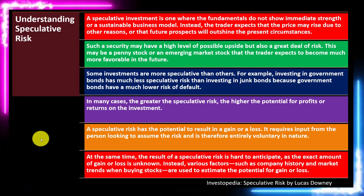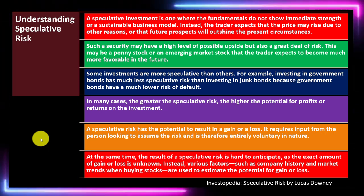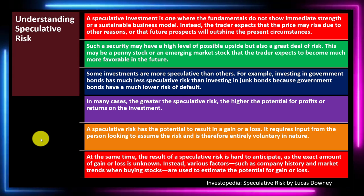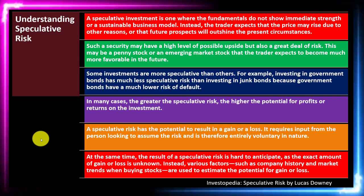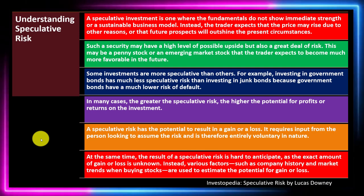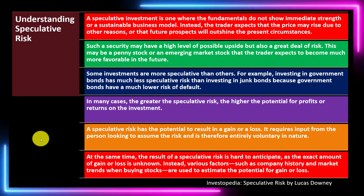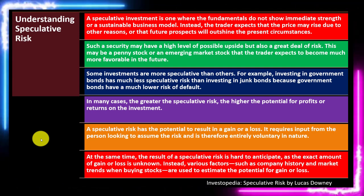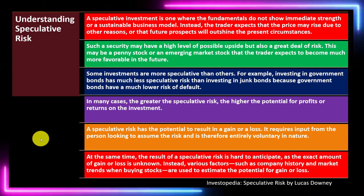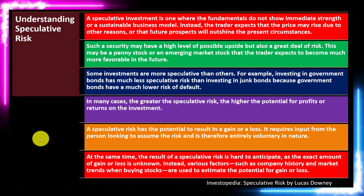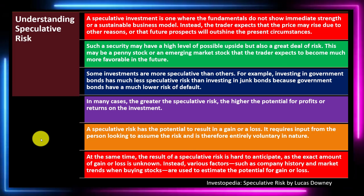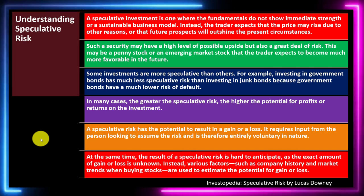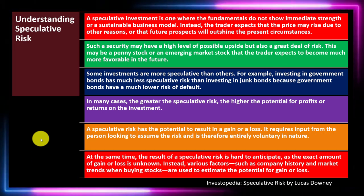In summary, pure risk means that if an event happens, you only face downside — no possibility of gain. These are the risks we typically want to insure against, especially when there's a real possibility they could occur, and if they did, the financial consequences would be significant. Those are the areas where insurance can help us mitigate our risk most effectively.